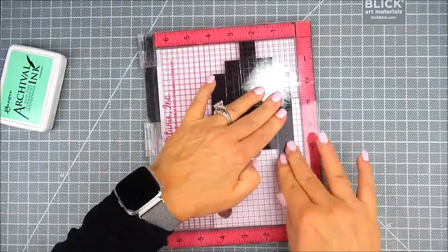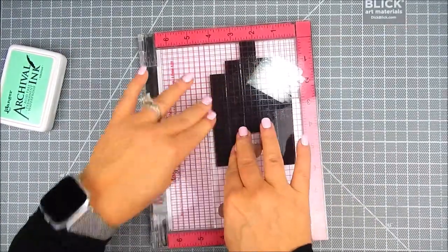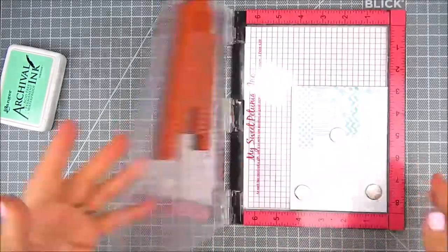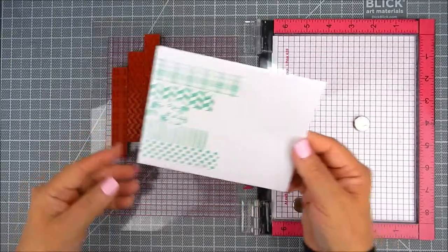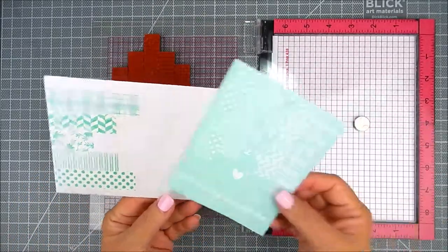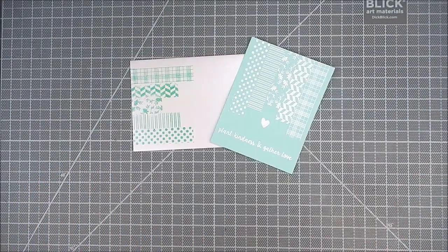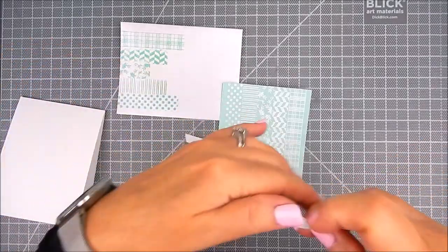So I am doing two passes with the MISTI on the envelope as well. I didn't match the ink exactly to the cardstock that I use but it's close enough to give the idea of that quilt look.